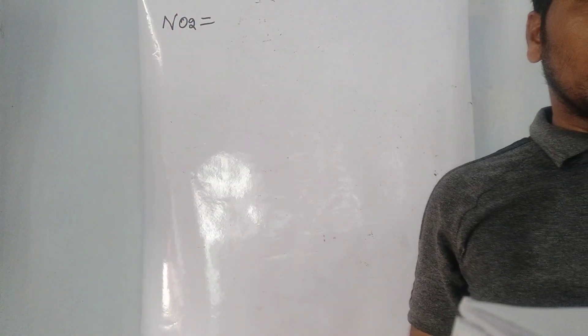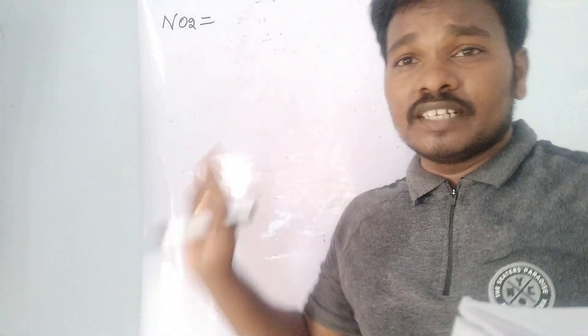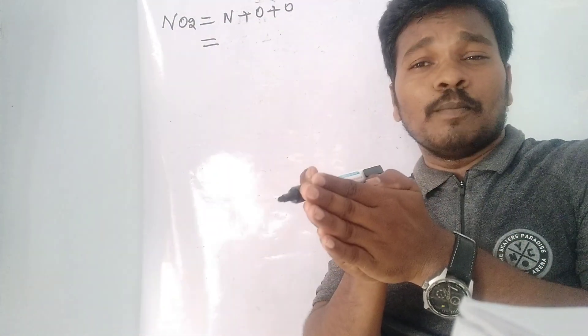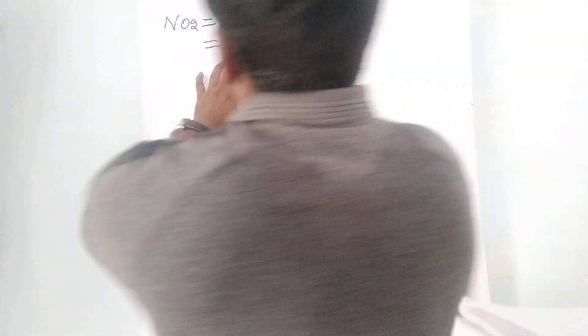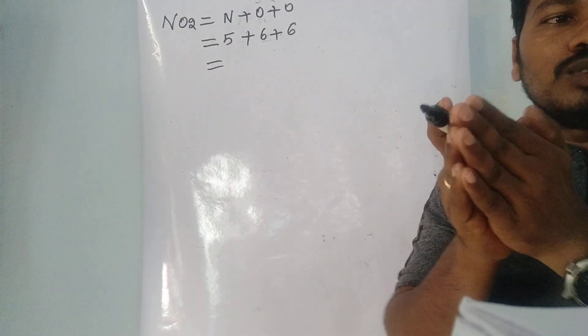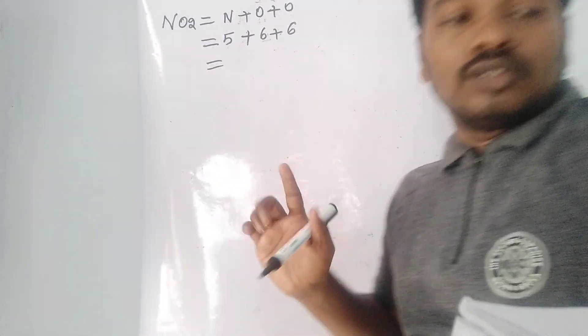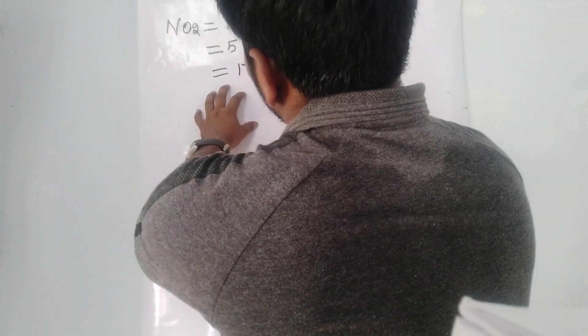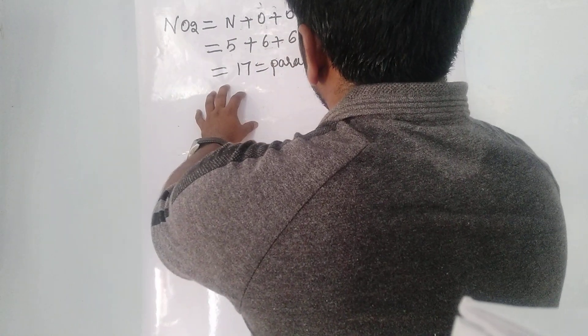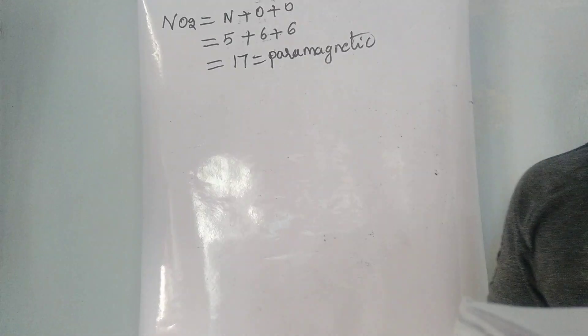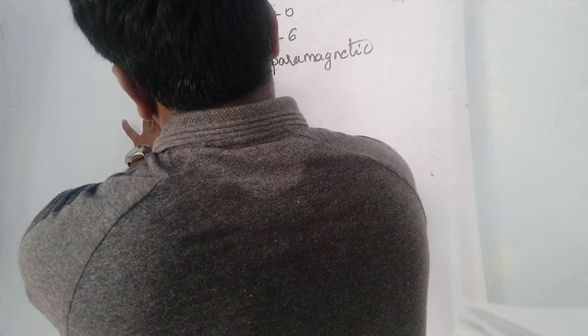Example: NO2. Write N + O + O. Below each atom write its group number or valence electrons. Nitrogen has 5 valence electrons, each oxygen has 6. Sum: 5 + 6 + 6 = 17. Since 17 is odd, NO2 is paramagnetic in nature.